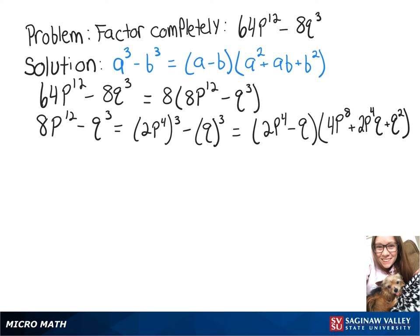So now starting all the way back from the beginning, we started with 64p to the 12th minus 8q to the 3rd. And we can rewrite that as 8 times 2p to the 4th minus q times 4p to the 8th plus 2p to the 4th times q plus q squared.